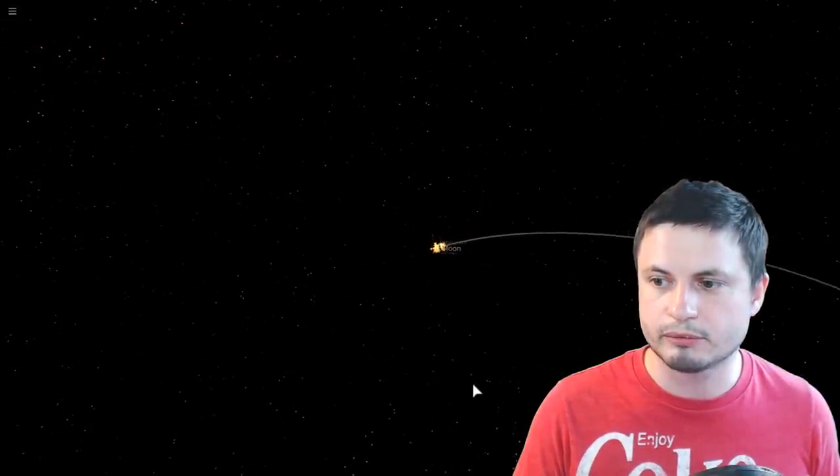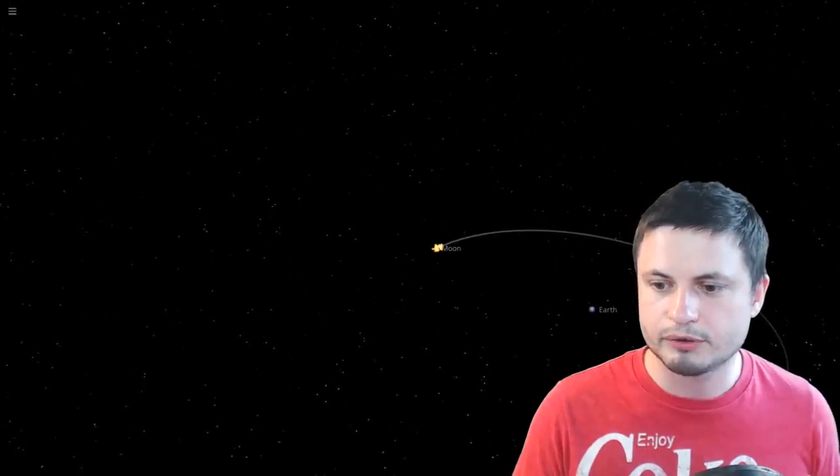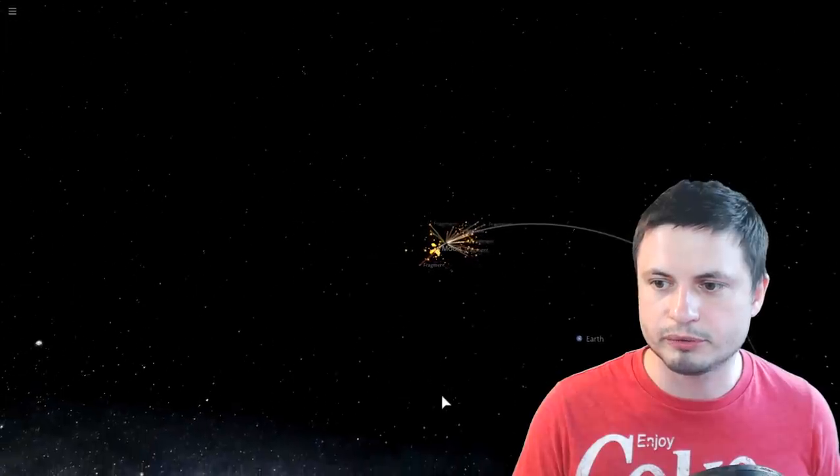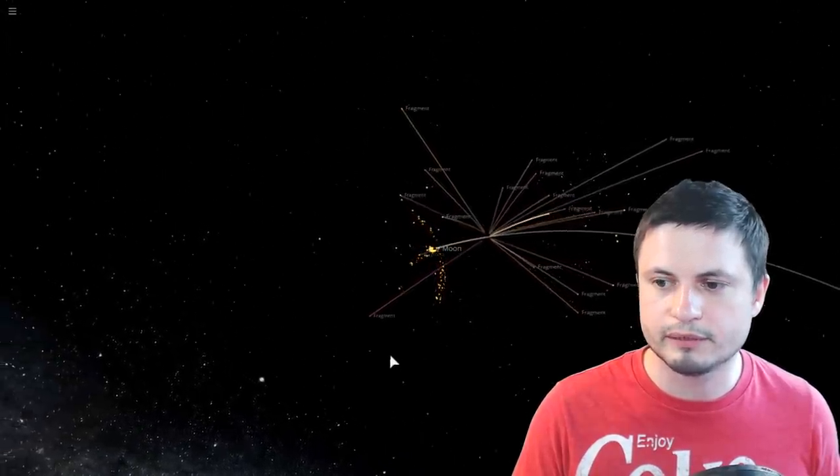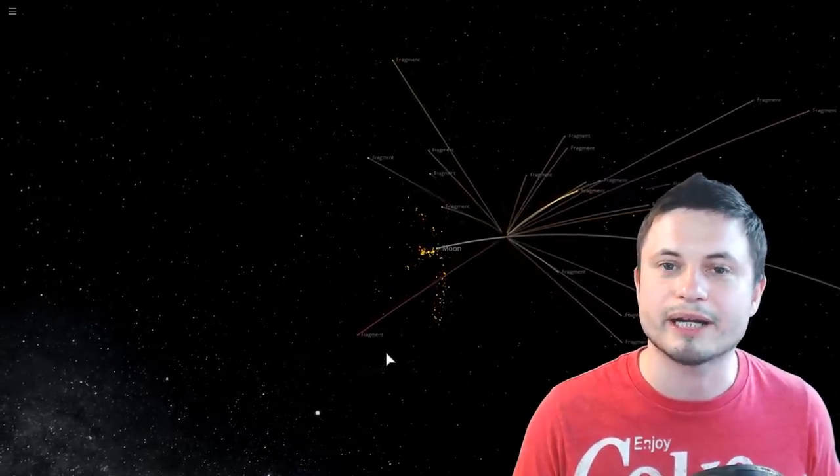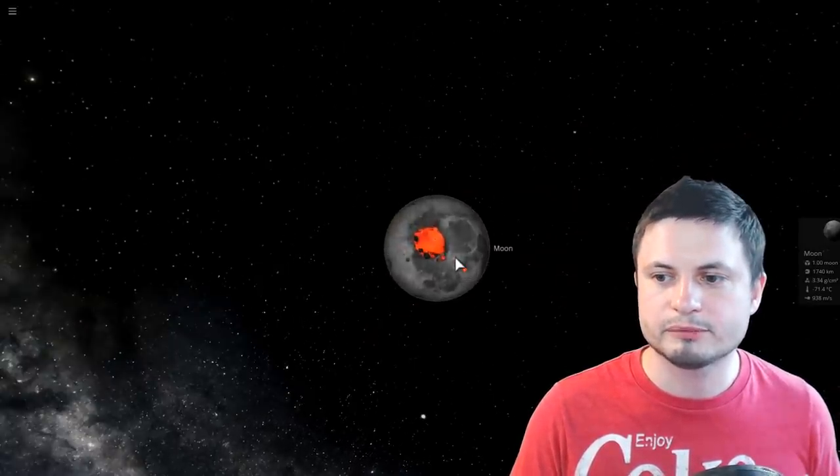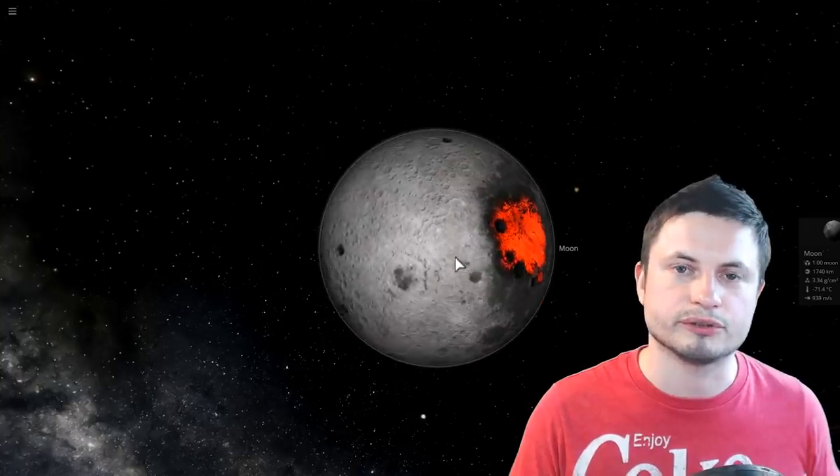So let's see if this particular collision dislodged the moon around Earth. And we're going to accelerate time here just to see where exactly the moon is going to end up. And it looks like it's still in orbit. So it was most likely not a direct face-on collision. It's quite possible that the actual collision was under an angle. So in that sense, it's quite an interesting research.